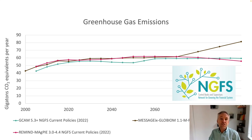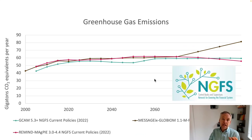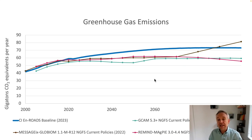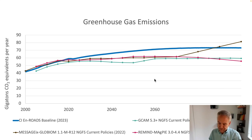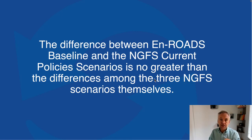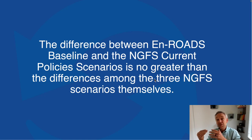Now I'm going to show you the result for the En-ROADS baseline — the blue line. You can see that we're slightly higher throughout much of the century than most of the other three, and we'll explain why. When we look at the different components of greenhouse gas net emissions, the difference between the En-ROADS baseline and the NGFS current policies scenario is really no greater than the differences among the three integrated assessment model results themselves.